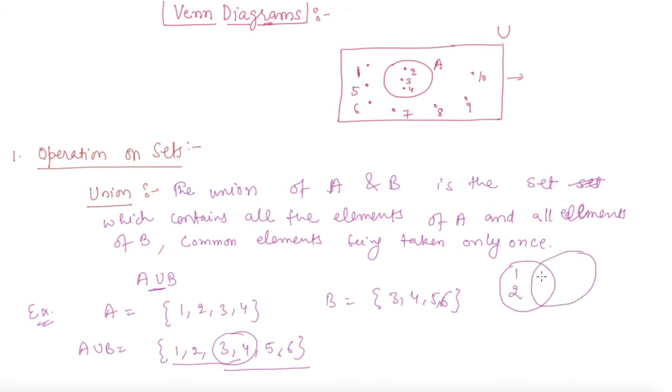Let us suppose 1, 2, 3, 4 and 5, 6. This is set A and this is set B. This whole structure, the shaded portion which I have shaded here, is the A union B portion.